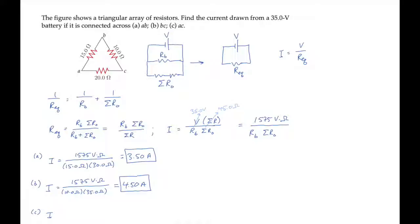In part C, the battery is across the 20 ohm resistor, and the others sum to 25 ohms, so that gives us a current of 3.15 amps.